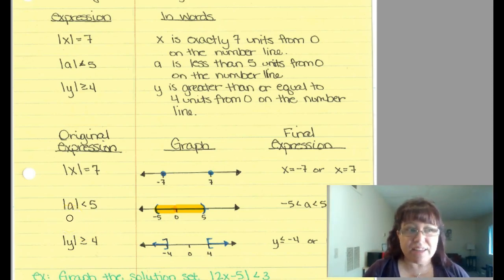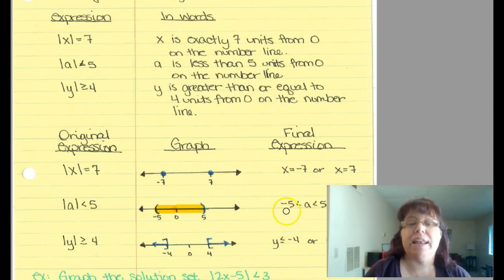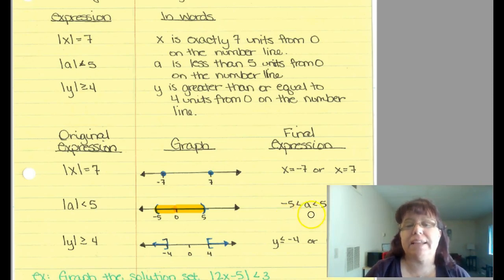When the absolute value of a is less than a number, the final expression is going to be: negative whatever number is less than a is less than whatever number.